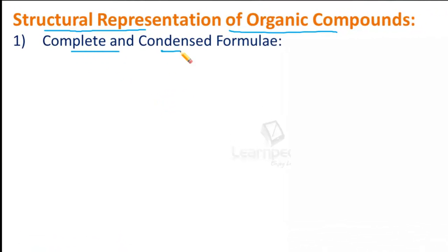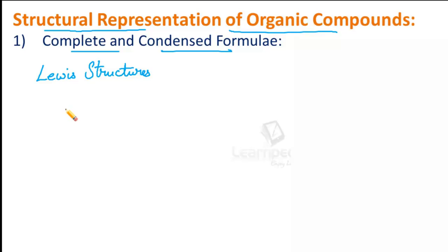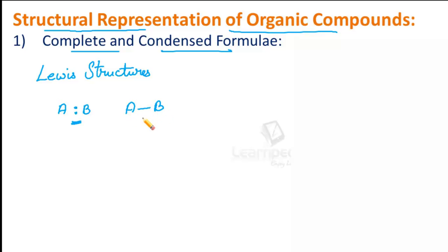One method is the complete and the condensed formulae. We had learnt in chemical bonding that Lewis structures are the simplest method of representing any molecule. In these structures, we need to indicate the atoms along with their electron pairs. If we write an electron pair in between atoms A and B, it means that this electron pair is shared by both atoms A and B. These structures are simplified by representing each pair of electrons making a covalent bond by a dash — one dash indicates a single covalent bond representing a sigma bond between atom A and atom B.